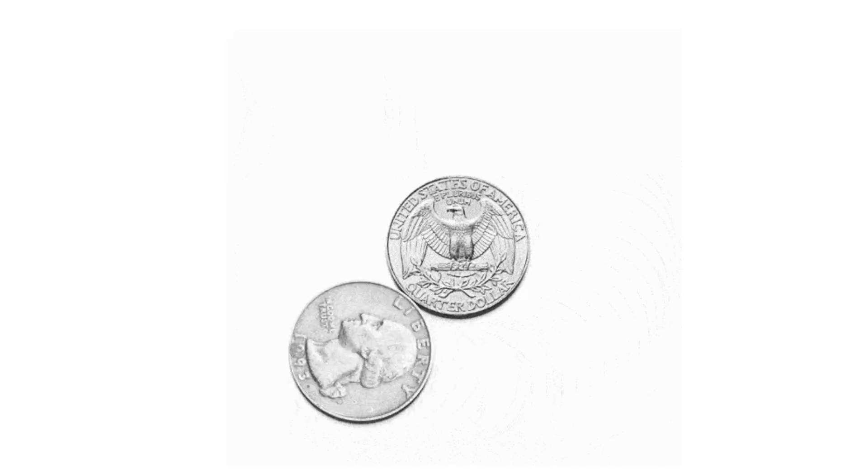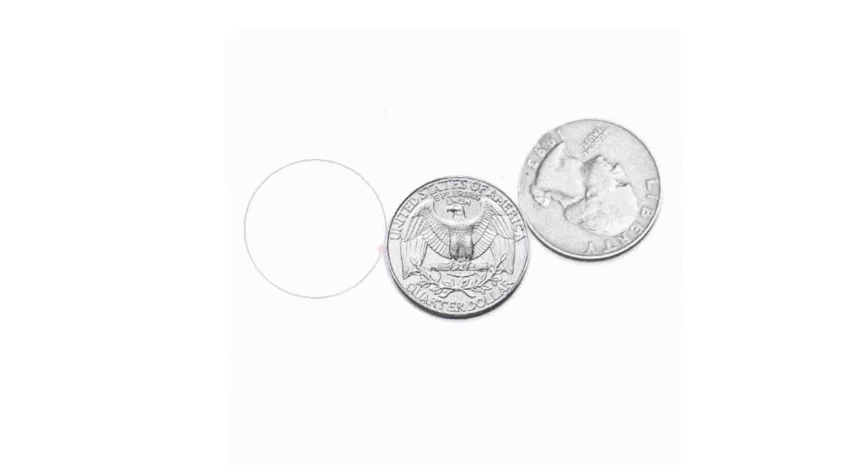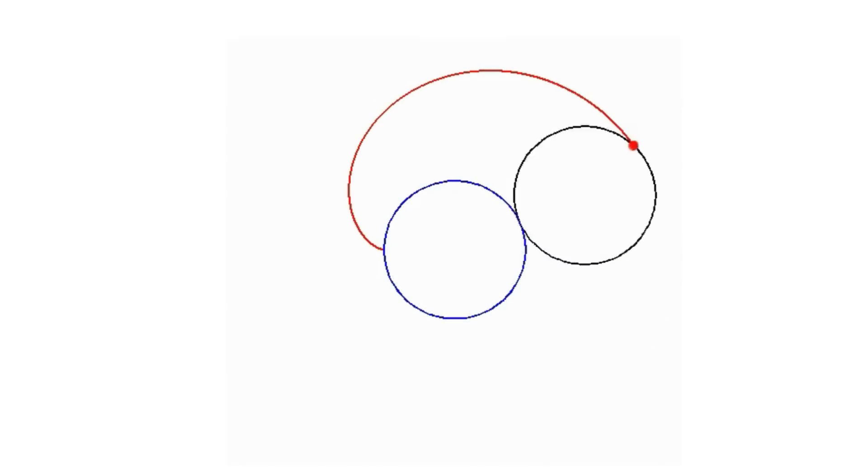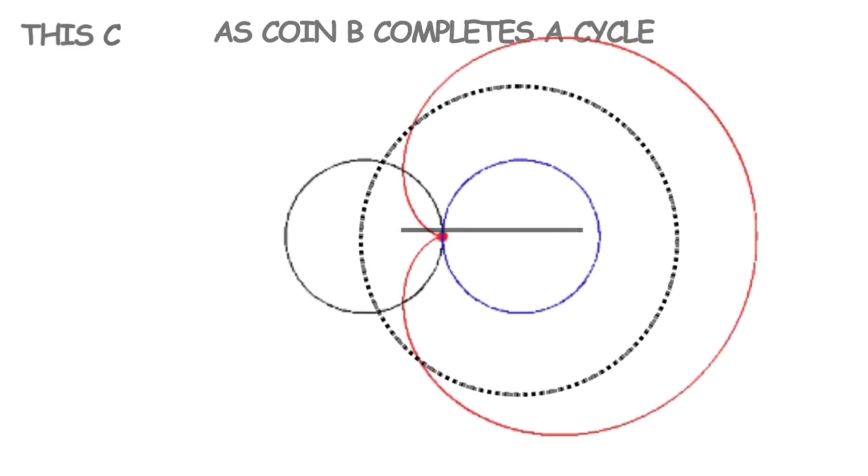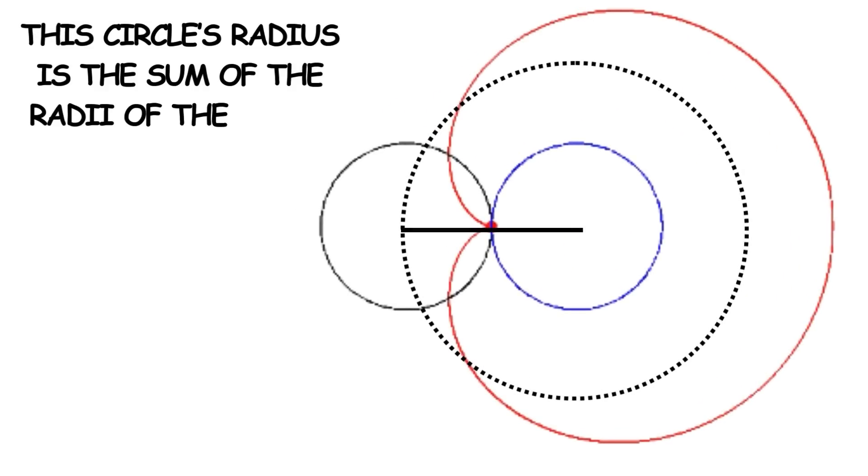let's return to rolling coin B around coin A. Once again, we will track the point on the edge of coin B that starts out touching the surface, which is the edge of coin A here. Then, when that point returns to touching the surface, we'll stop rolling. As coin B completes a cycle, the center of coin B traces out a circle. This circle's radius is the sum of the radii of the coins, which is 2 centimeters.